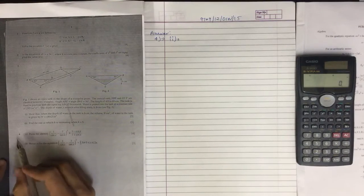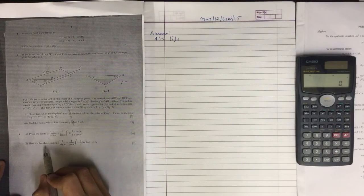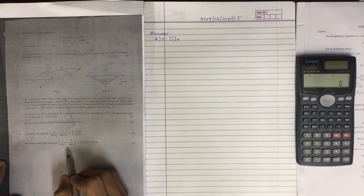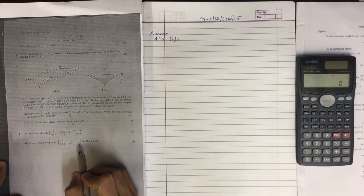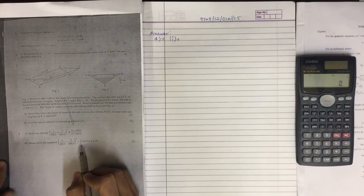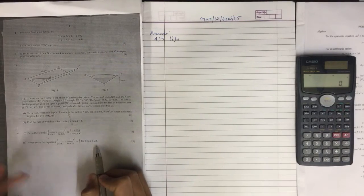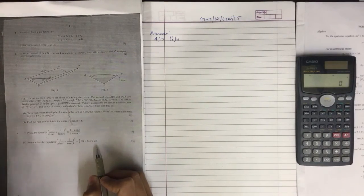Now the second part of question 4 is: hence solve the equation (1 over sin x minus 1 over tan x) to the whole squared equals 2 over 5, where x is between 0 to 2 pi.